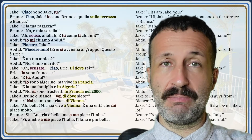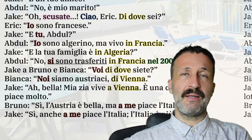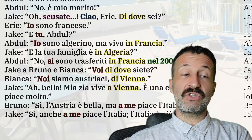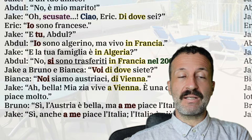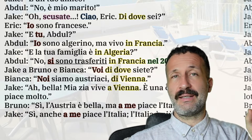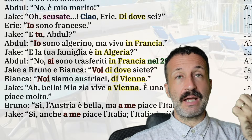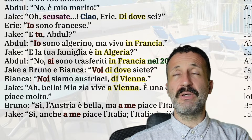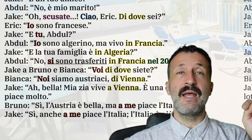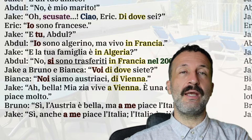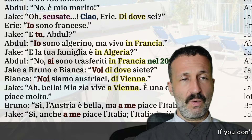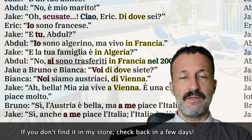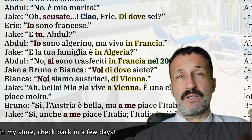In English you would say 'Austria is nice, but I like Italy' — you put emphasis on 'I.' In Italian, you have to remember that you don't say 'I like Italy'; you're saying 'Italy is pleasing to me.' Either rewind the video or get my PDF on pronouns, which is the most comprehensive chart on pronouns I could think of making.